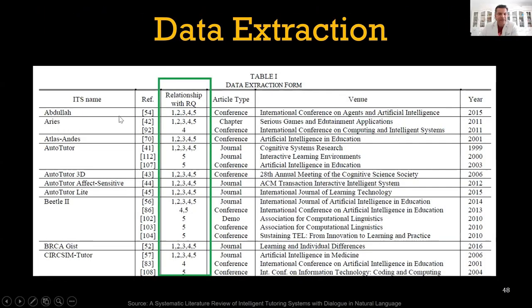Another data extraction table: ITS, intelligent tutoring system. This is the name of the tutoring system, or in your case it could be the research paper, the reference citation. This paper helps to answer which research question, all five research questions or only some. You can see some of them there. Type of article, where it was published, which year it was published, some statistical information.